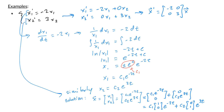Notice the pattern here. Looking at the matrix, -2 is an eigenvalue with corresponding eigenvector [1, 0], and we see e^(-2t) and [1, 0] appearing in the solution. Similarly, 3 is an eigenvalue with eigenvector [0, 1], and we see e^(3t) and [0, 1] in the solution.